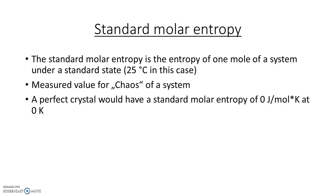In this case, chaos means the motional freedom of the parts of the system, which of course depends on the given temperature. For example, a perfect crystal would have a standard molar entropy of 0 joules per Kelvin times mole at 0 Kelvin.